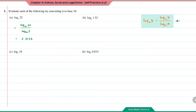Give your answer at least to 4 significant figures. Question B: log base 6 of 1.32. This will be log base 10 of 1.32 divided by log base 10 of 6, which gives the answer of 0.1549.